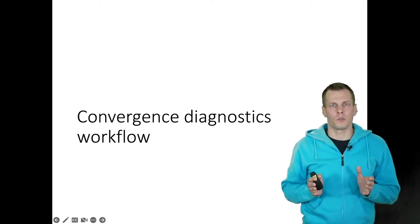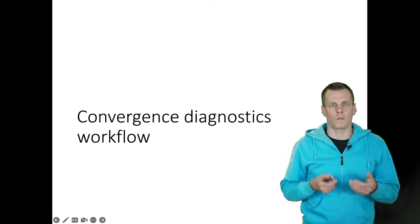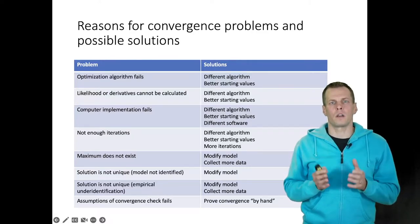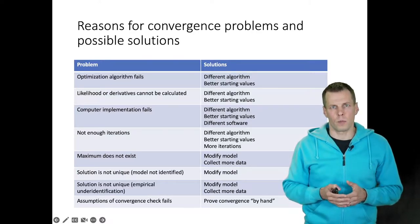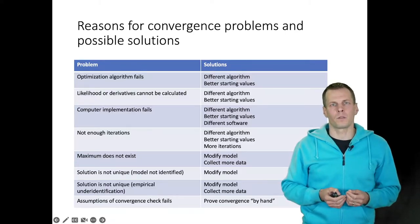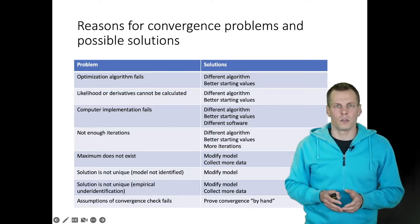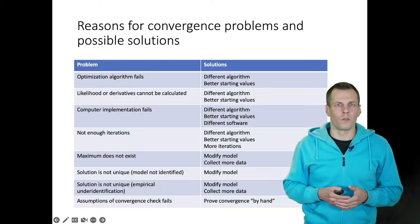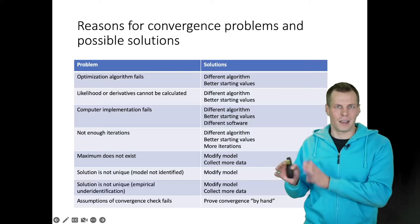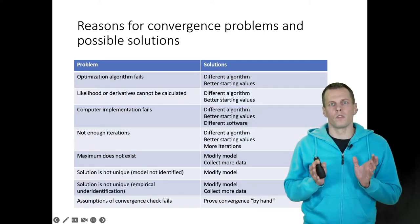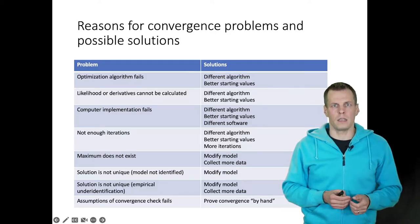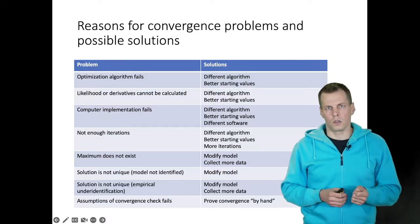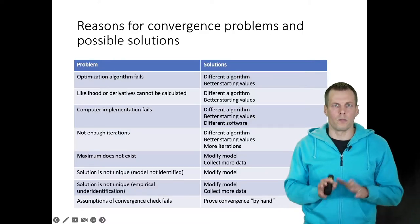Let's take a look at how I troubleshoot non-converged models. What is my workflow? A model can fail to converge in multiple different ways, and it is useful to understand different techniques for troubleshooting. It really boils down to two different factors: how easy the diagnostic is to implement, and how likely the diagnostic is to give me useful information about a particular problem.